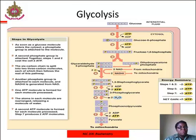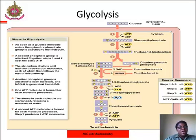As soon as a glucose molecule enters the cytosol, a phosphate group is attached to the molecule. A second phosphate group is then attached. Together, the first and second steps cause the cell to use ATP. The six-carbon chain is then split into three-carbon molecules, each of which follows the rest of the pathway. Another phosphate group is attached to each molecule and NADH is generated from NAD. One ATP molecule is formed from each molecule processed. The atoms in each molecule are rearranged, releasing a molecule of water. A second ATP molecule is formed for each molecule processed, producing two ATP molecules in this step.